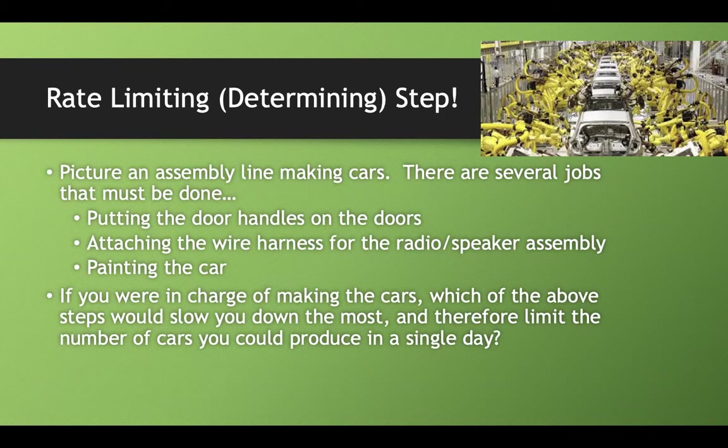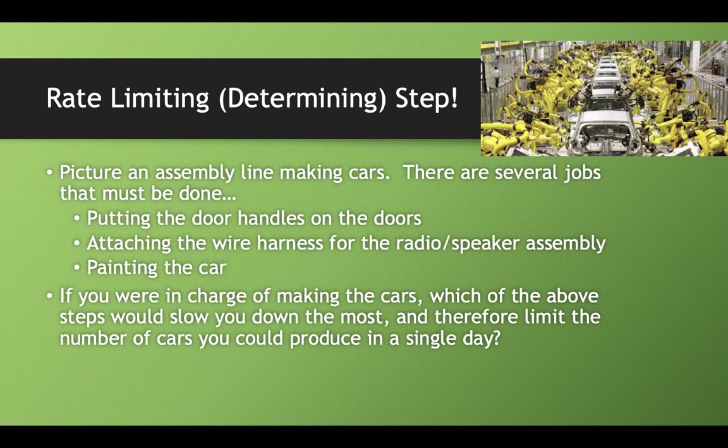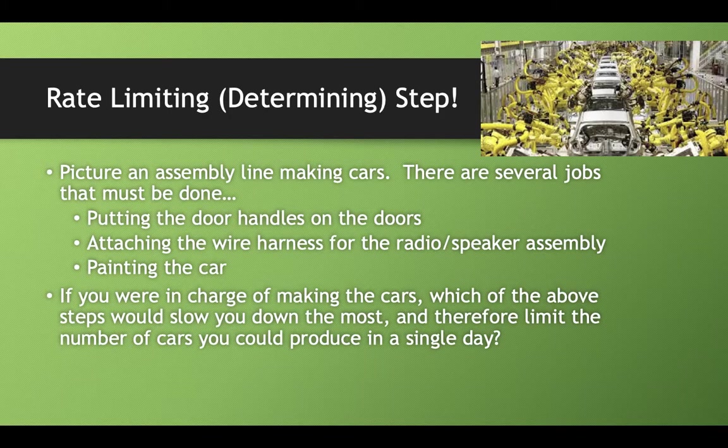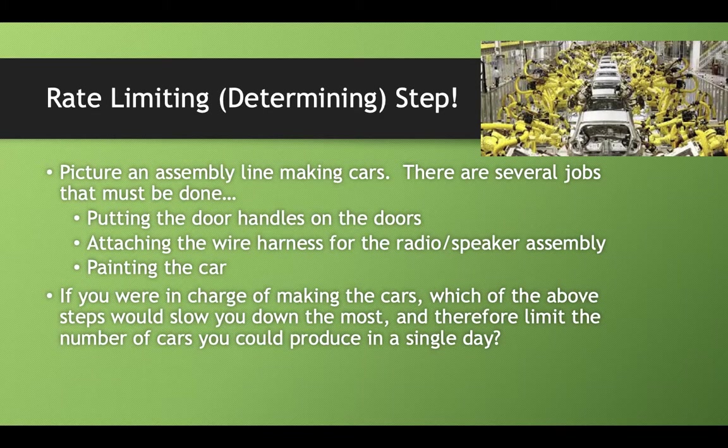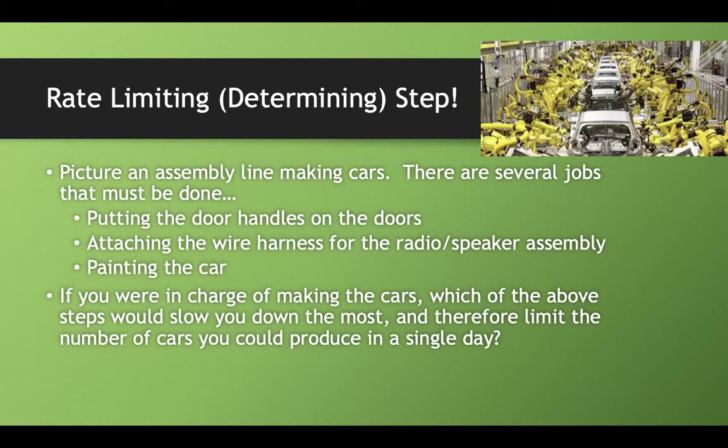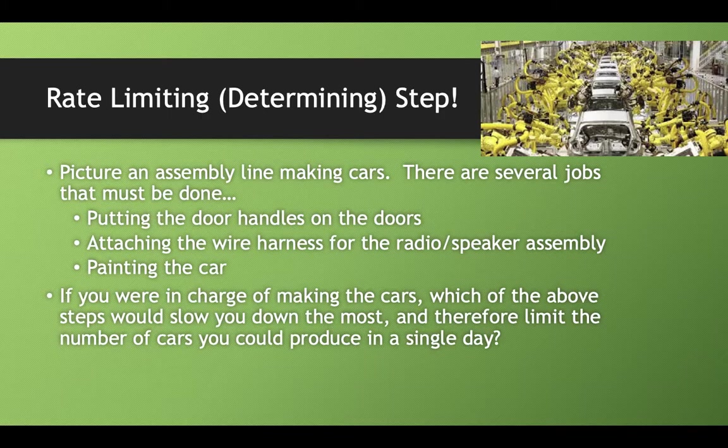Let's say you work in a car manufacturing plant and there are three jobs that have to get done: putting door handles on the doors, attaching a wire harness for the radio to work, or painting the car. Which of those steps would slow you down the most and therefore limit the number of cars you could produce in a single day? Putting the door handles on the door sounds pretty quick. Attaching a wire harness might take a little bit longer. But painting the car would take a long time to paint and allow it to dry. That step slows you down. That's what we would call that rate limiting step, the rate determining step.